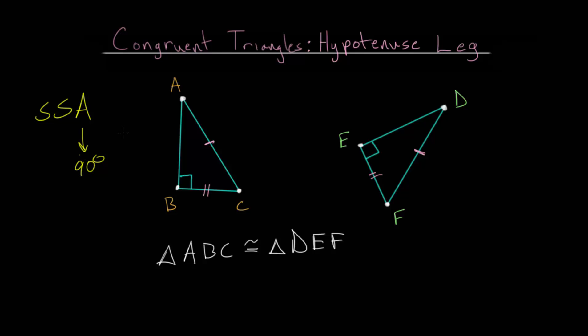When this is 90 degrees, this will always determine that the two triangles are congruent, and we call this the hypotenuse-leg theorem.